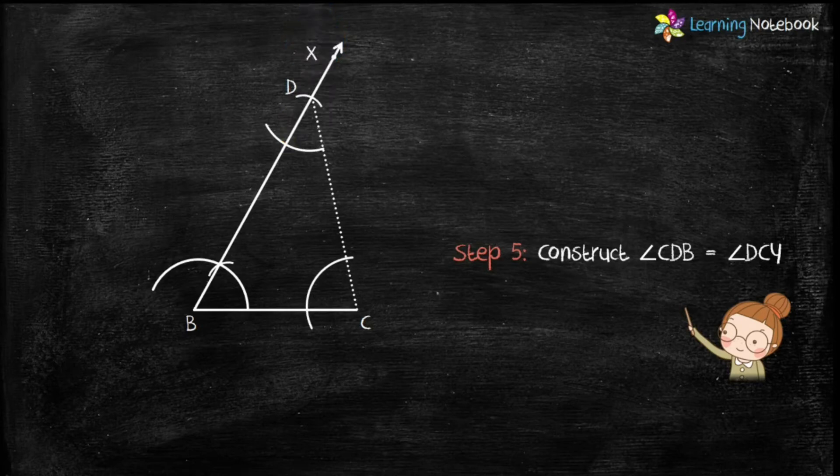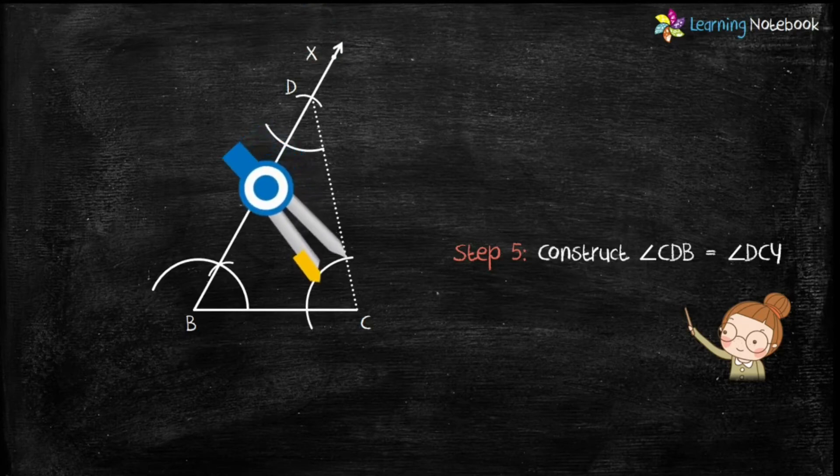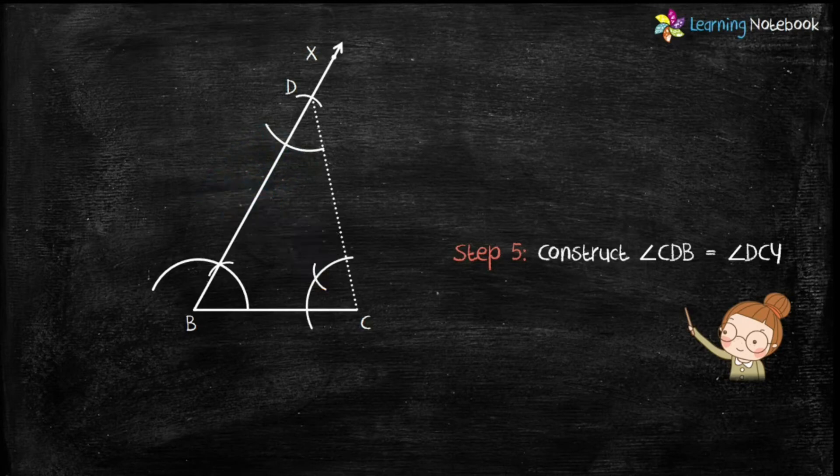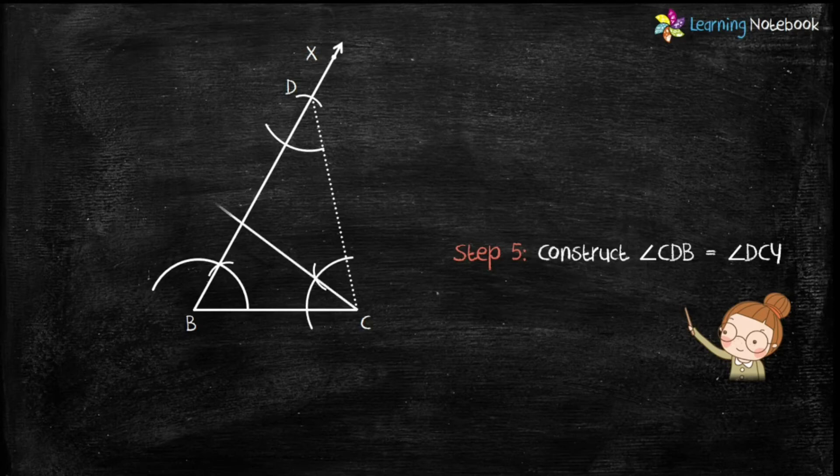With this radius, place the compass on arc drawn at point C and cut the same arc. Now join the intersection point and point C to get the ray CY.